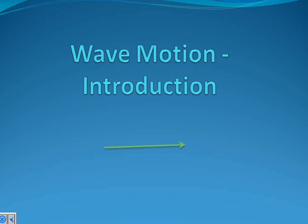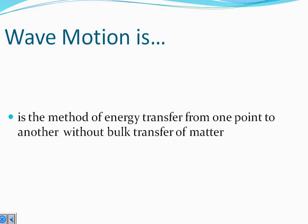Hi students. Today I am going to tell you about wave motion. Now what exactly are waves? We keep hearing about light waves, radio waves, sound waves. So how is wave motion different from say a ball moving on the ground? There is a key difference. Wave motion is the method of energy transfer from one point to another without bulk transfer of matter. What this means is that in wave motion, energy moves from one point to another, but matter does not move from one point to another.